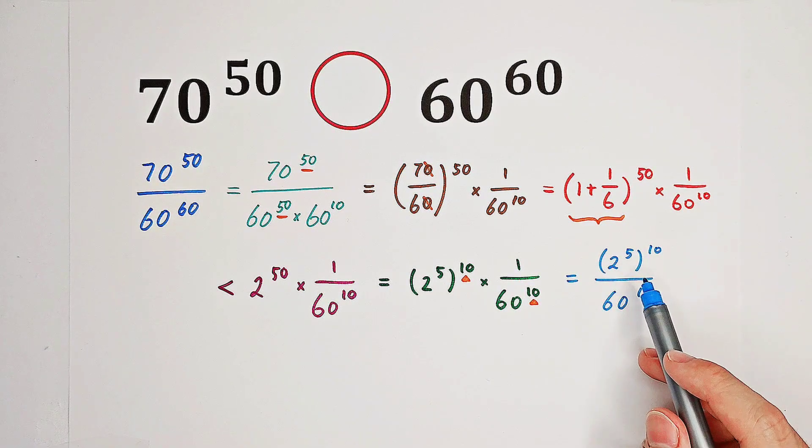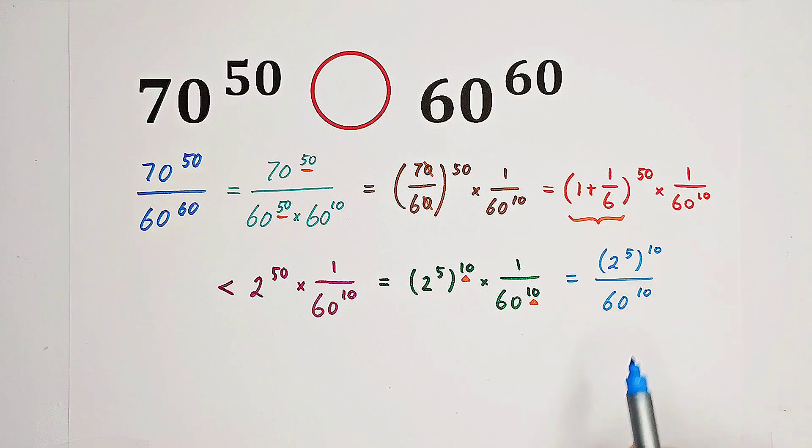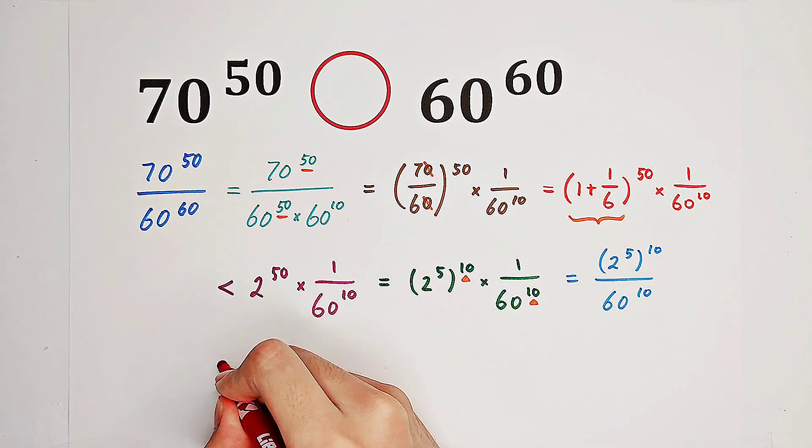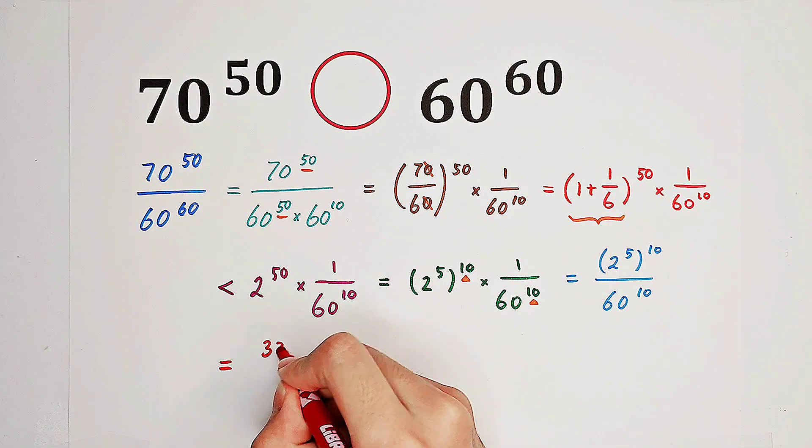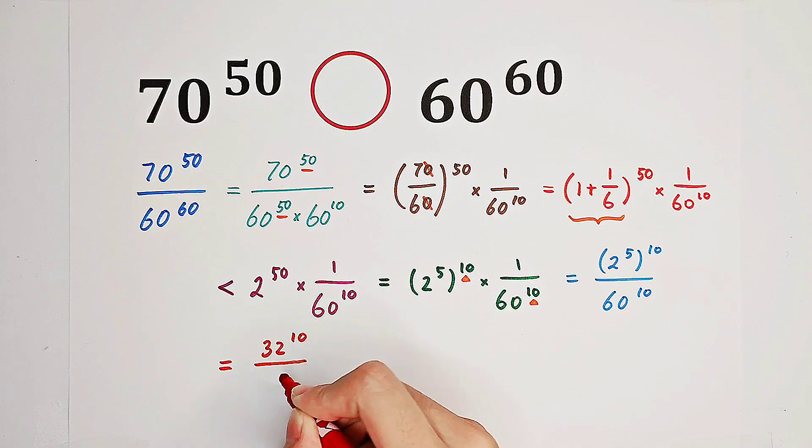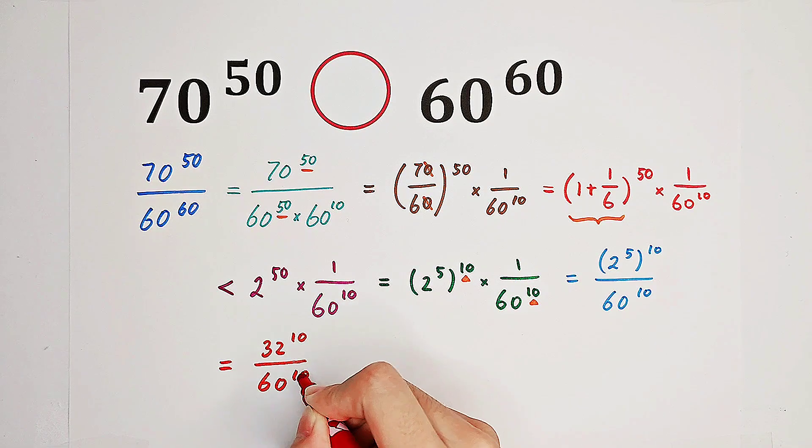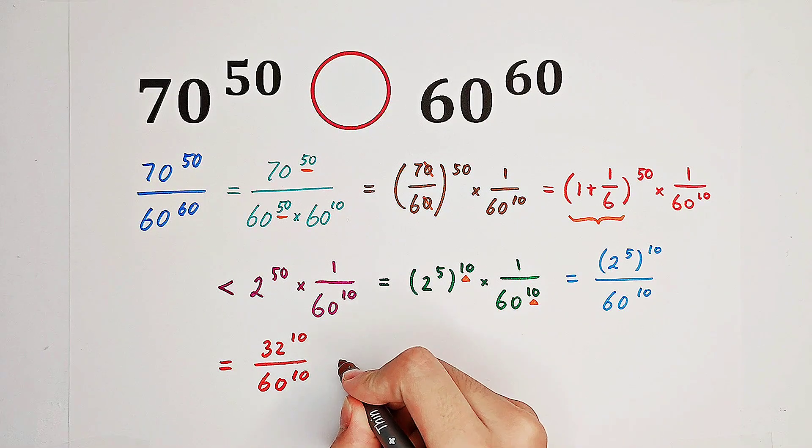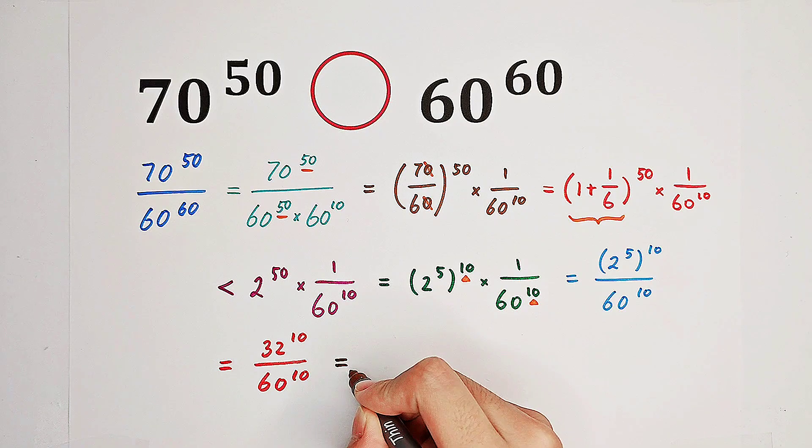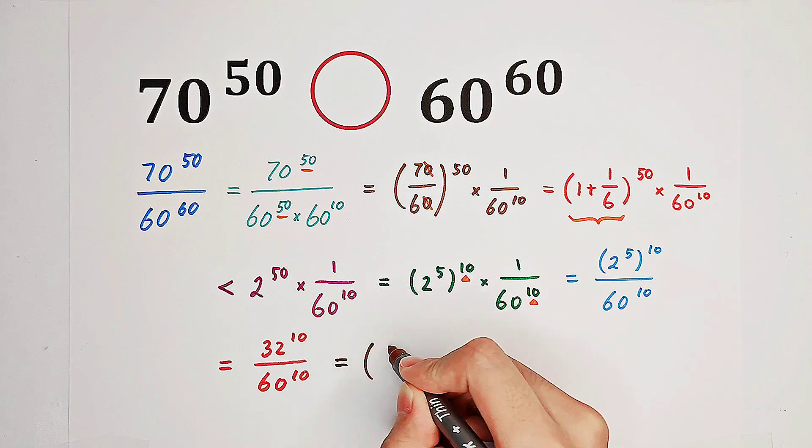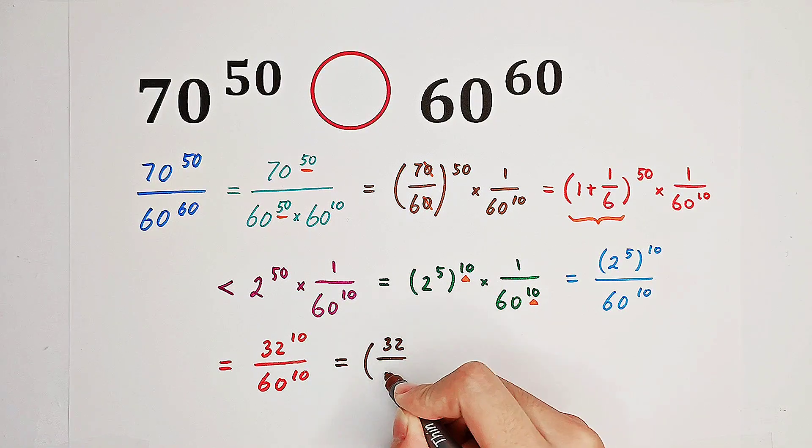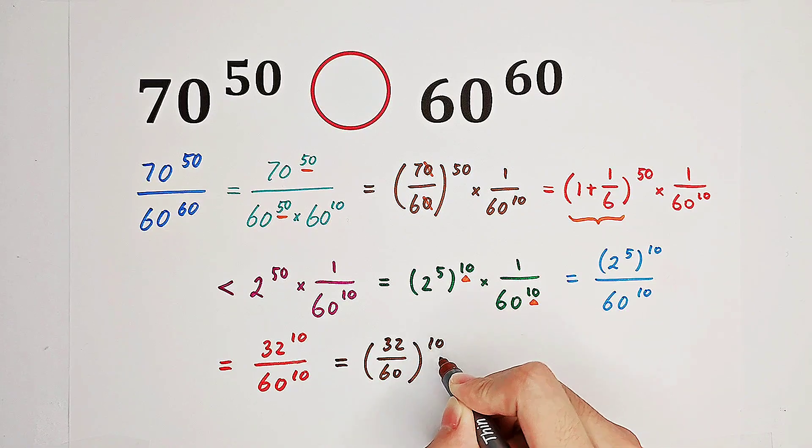2 to the power of 5 is 32. So this fraction will turn to 32 to the power of 10 over 60 to the power of 10. And the exponent 10 can be taken out. So it is 32 over 60, all to the power of 10.